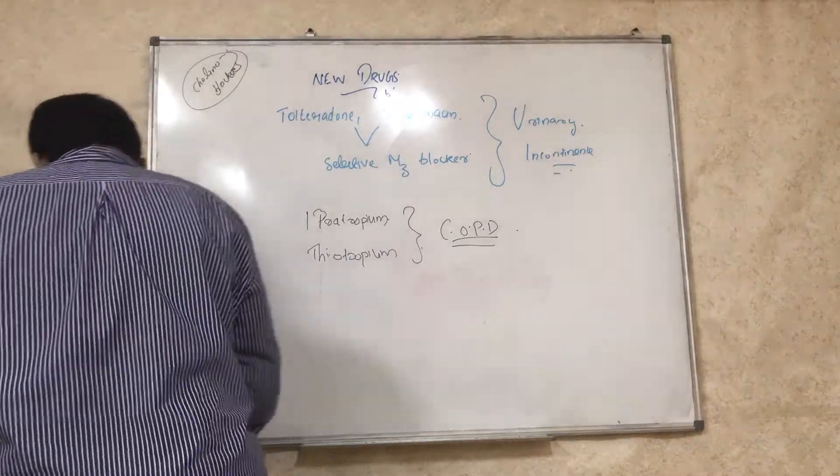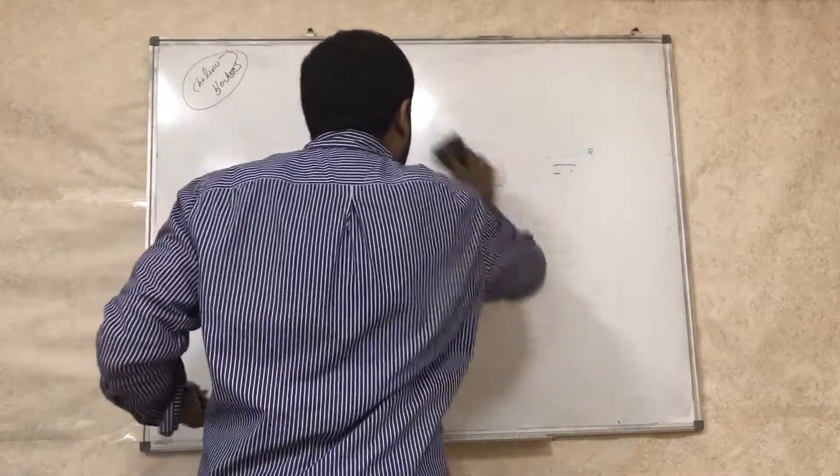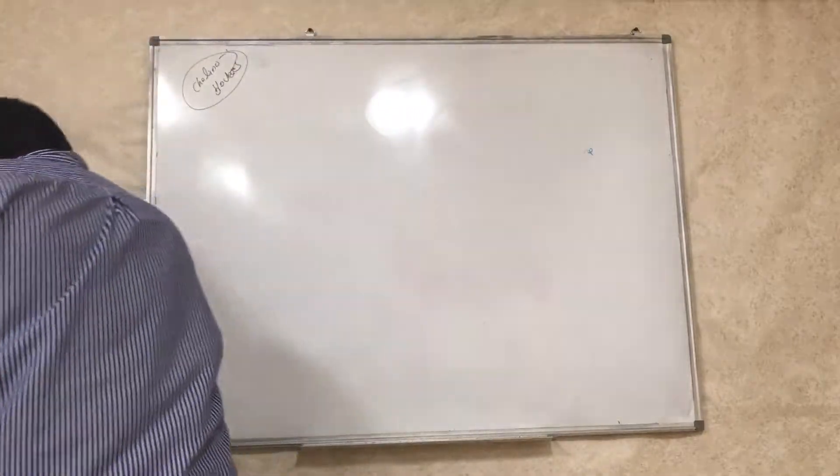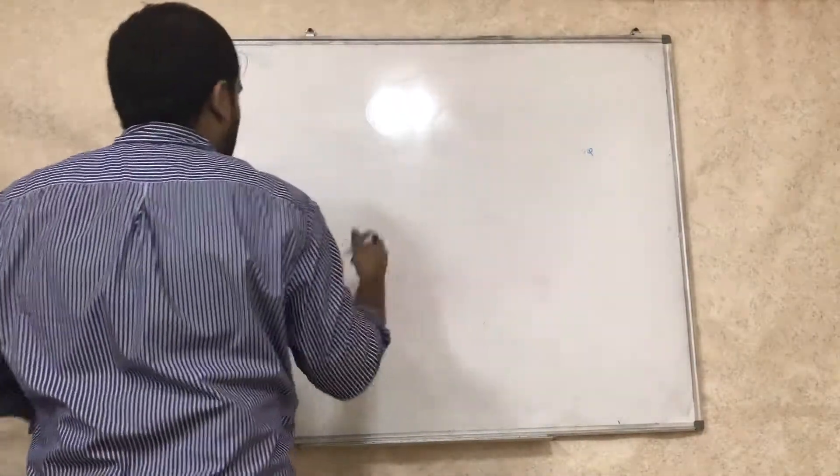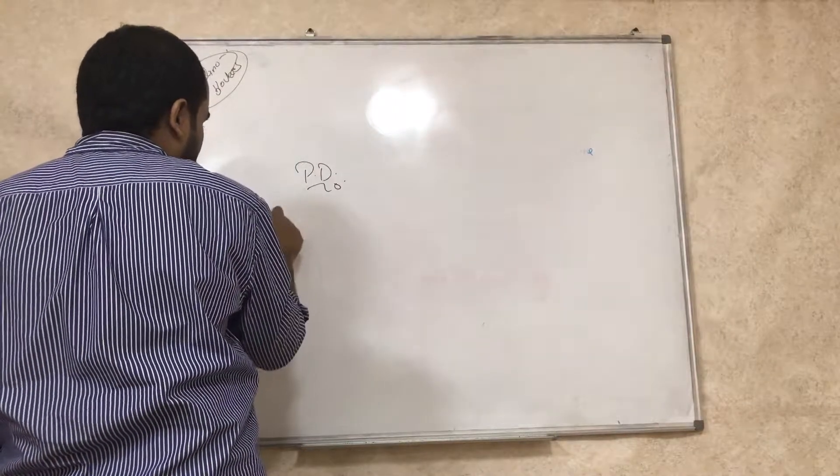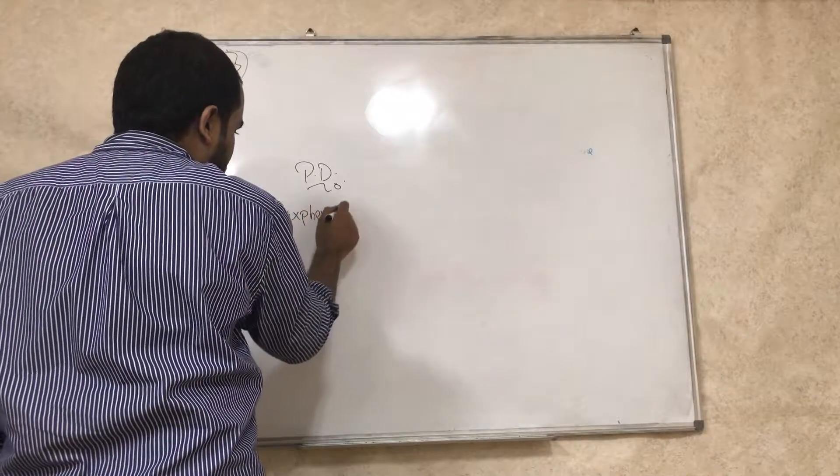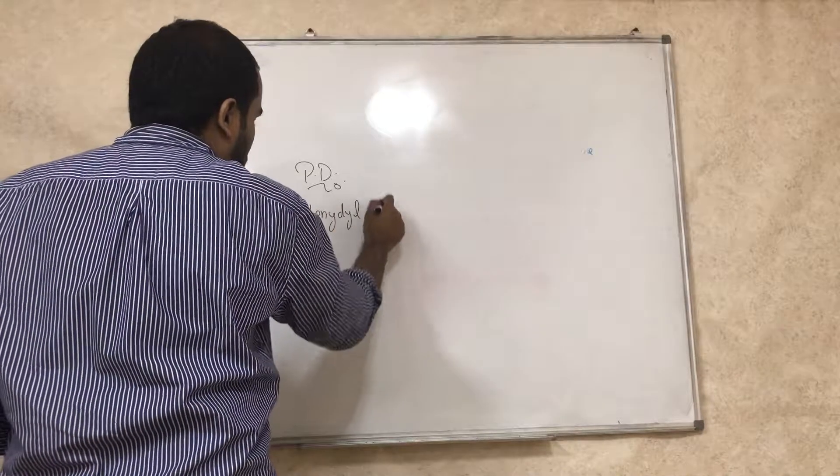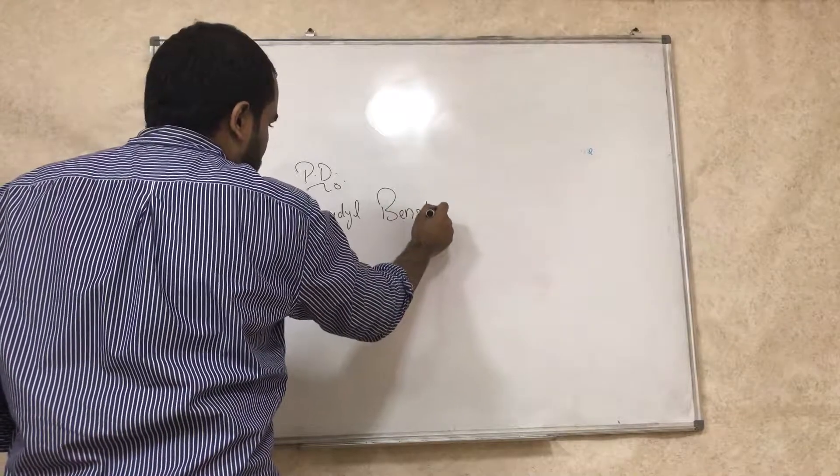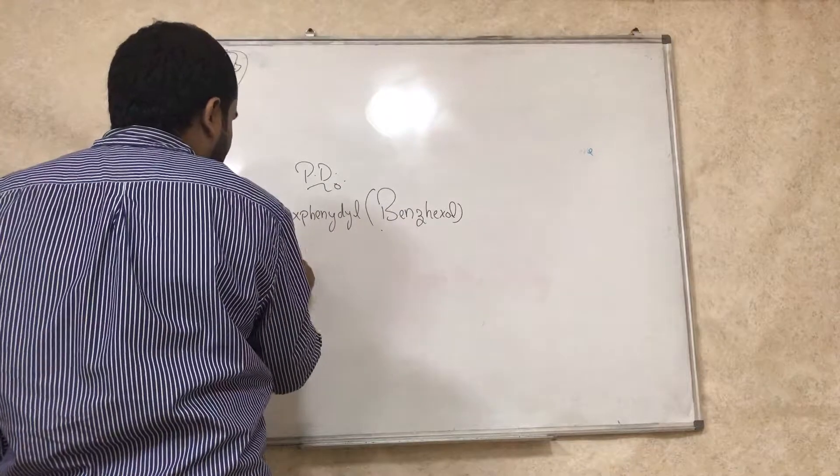Now there are some other drugs. So you remember the drug-induced Parkinson - for Parkinson disease that is induced by drugs, we can use drug trihexyphenidyl, it is also called benzhexol. You can use biperiden.